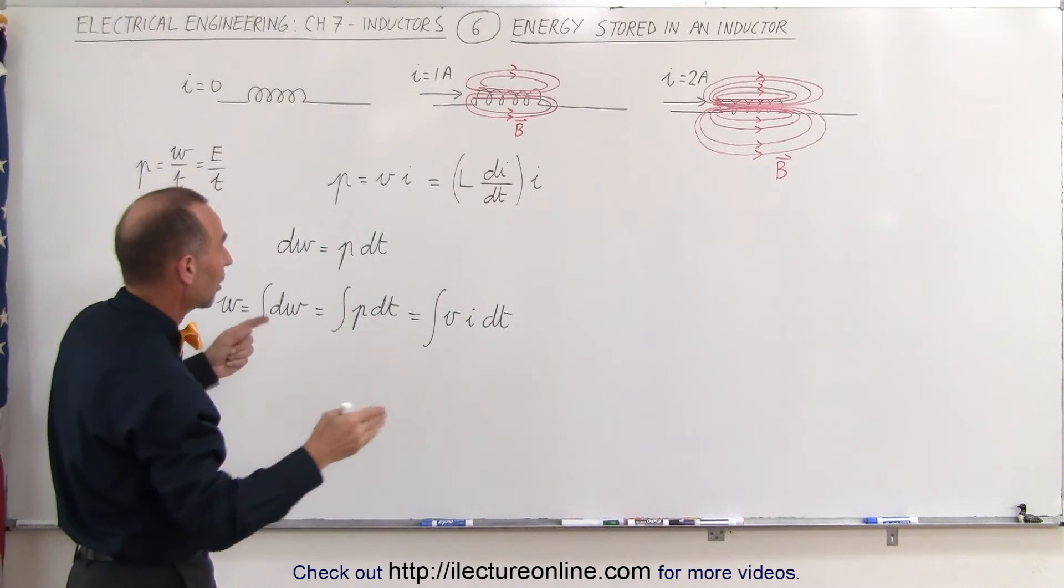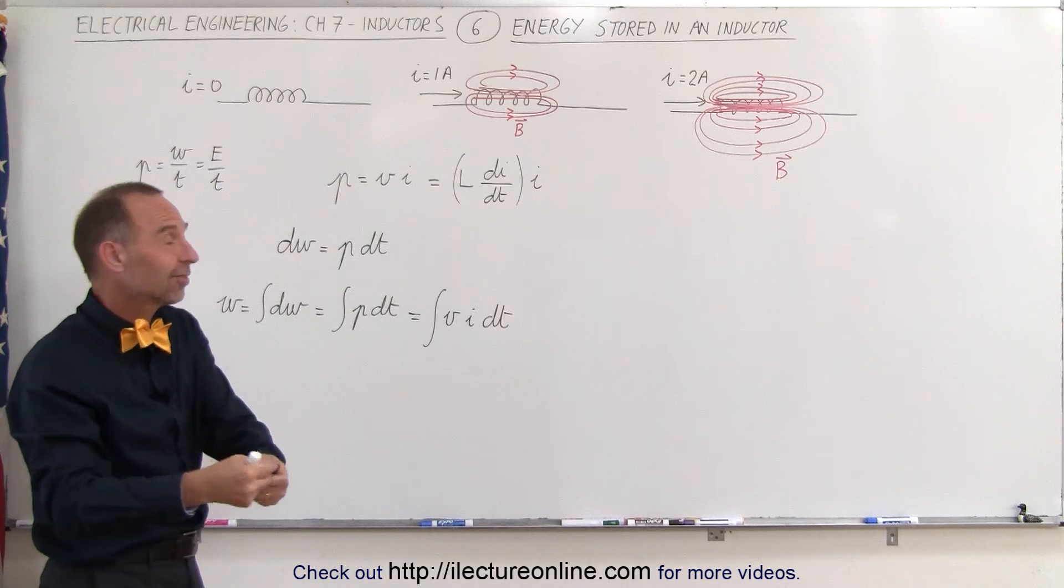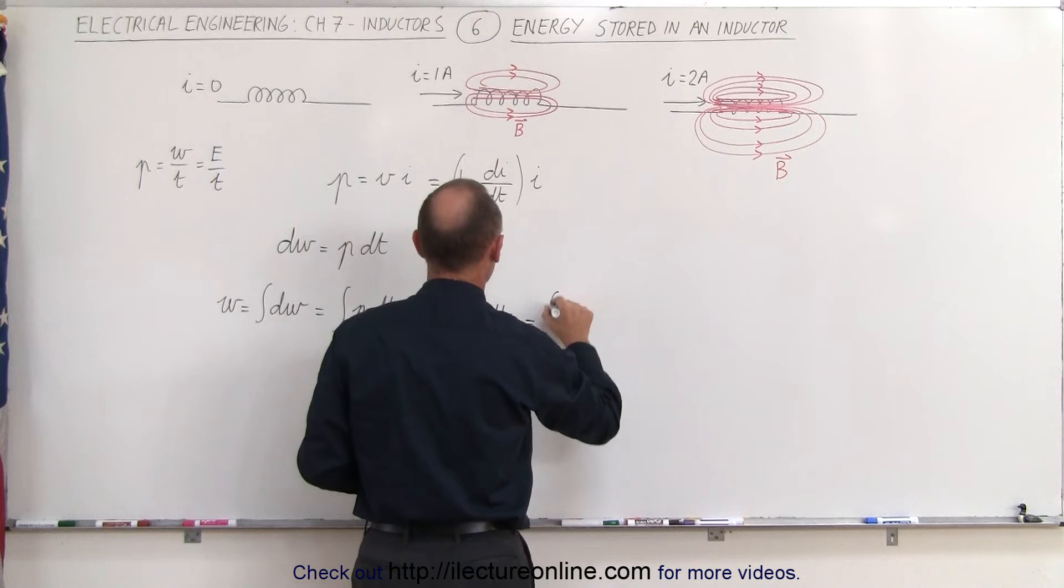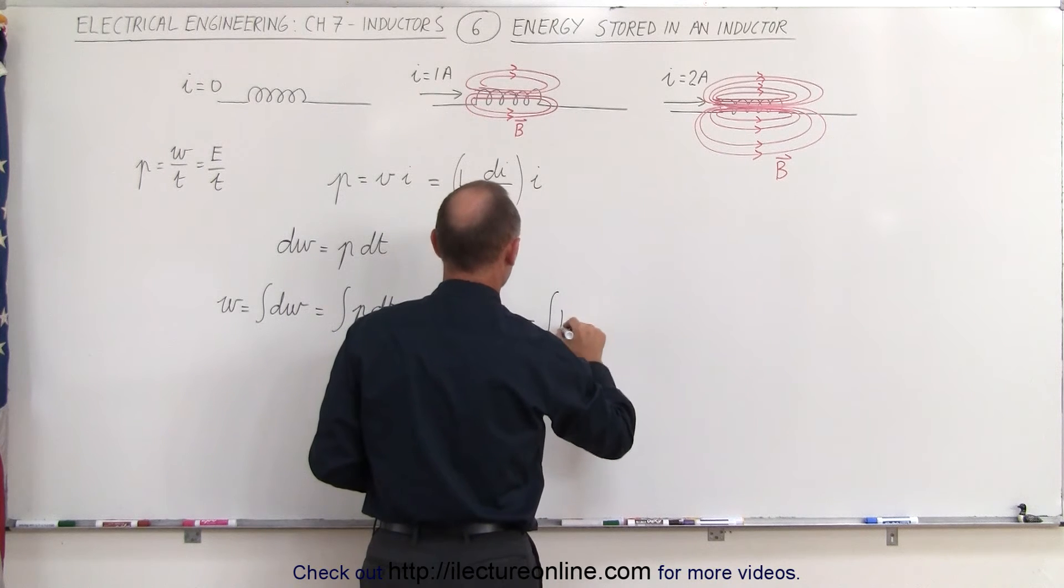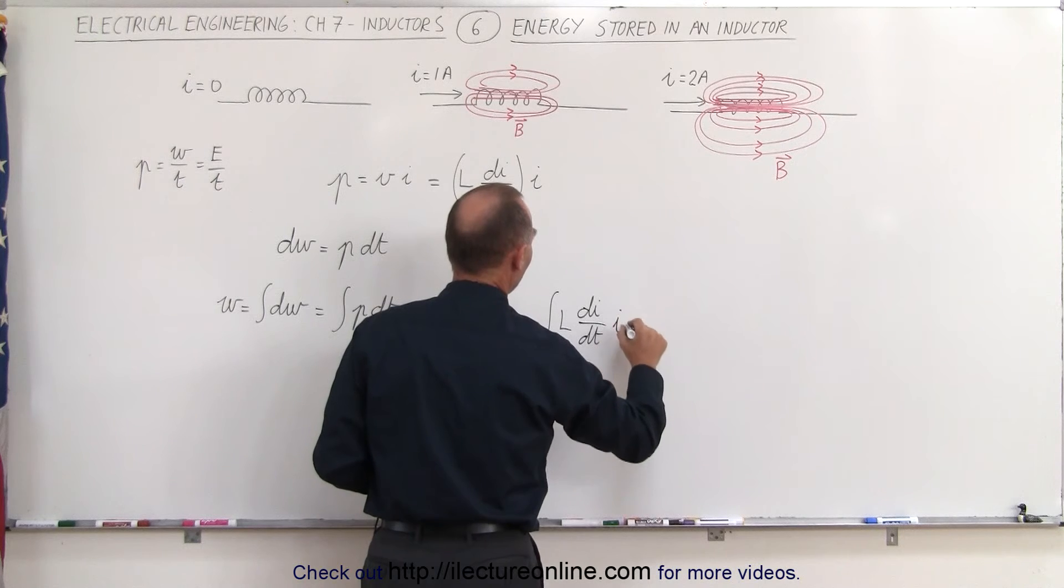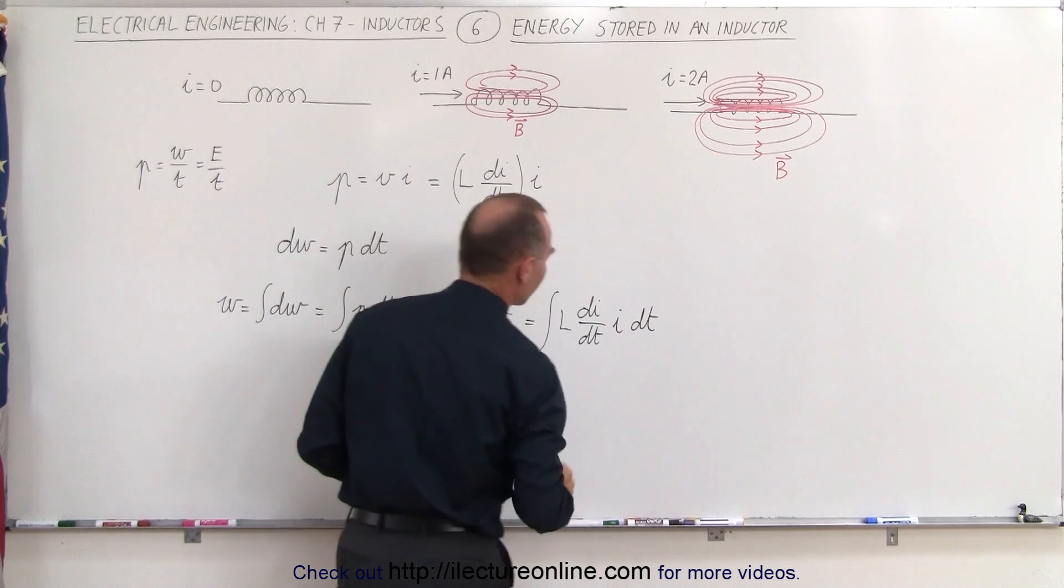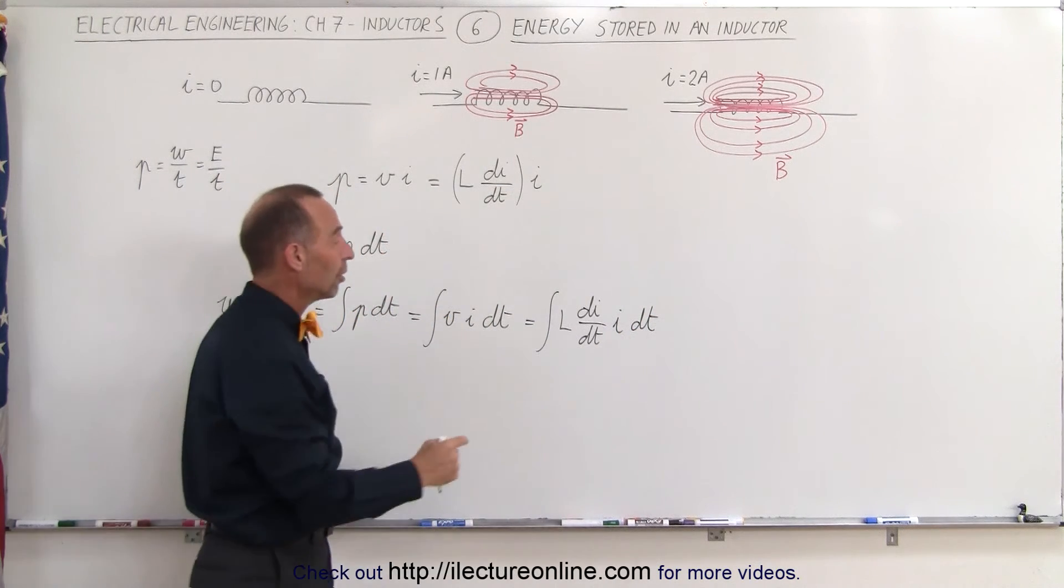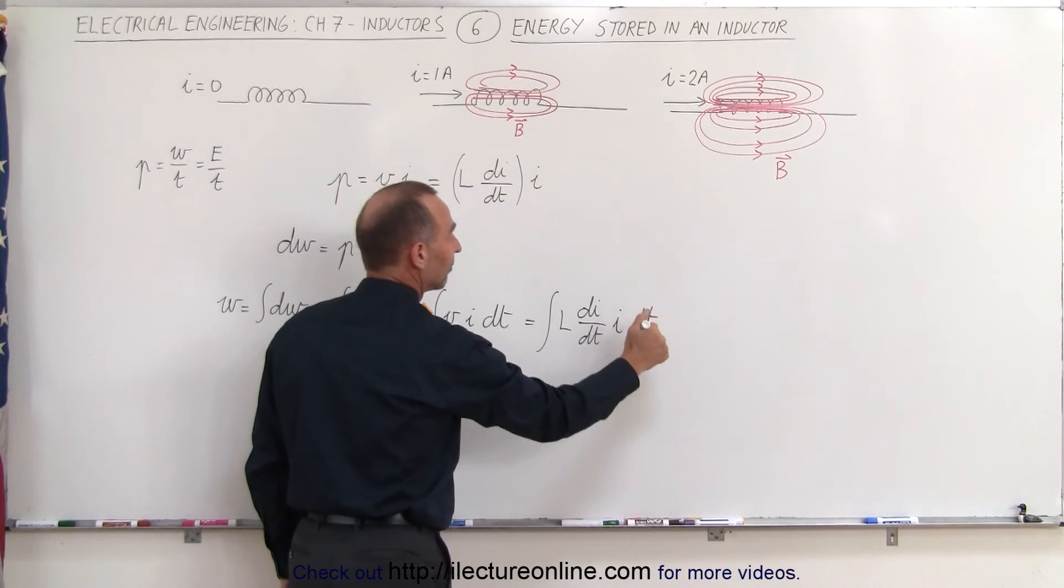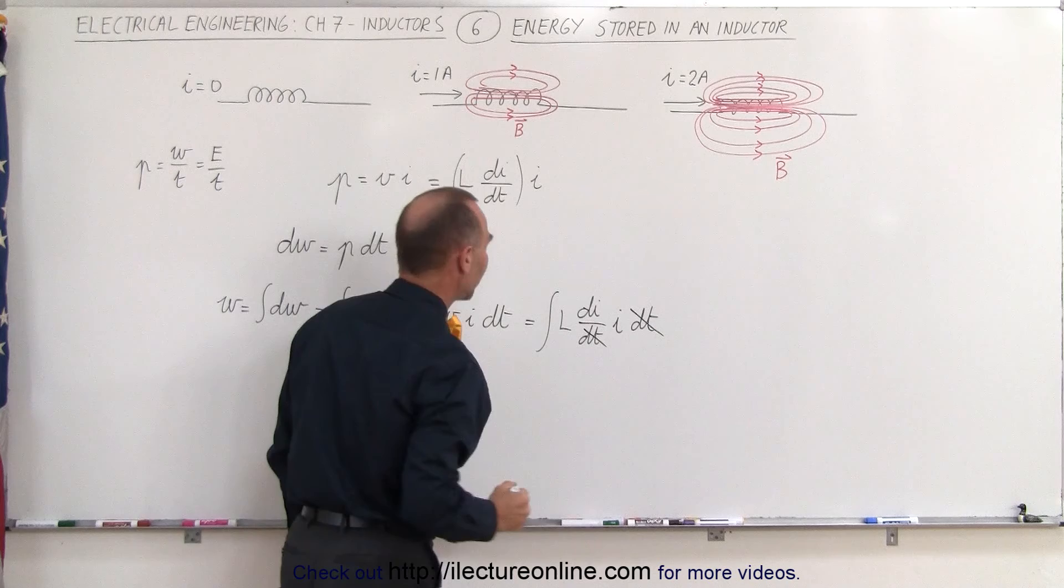After all, the potential across an inductor is equal to the inductance times the rate of change of the current with respect to time. So this can be written as the integral of L times dI/dt times I times dt. Now notice that L is a constant that can come outside the integral sign and dt can be divided into the dt here that cancels out.